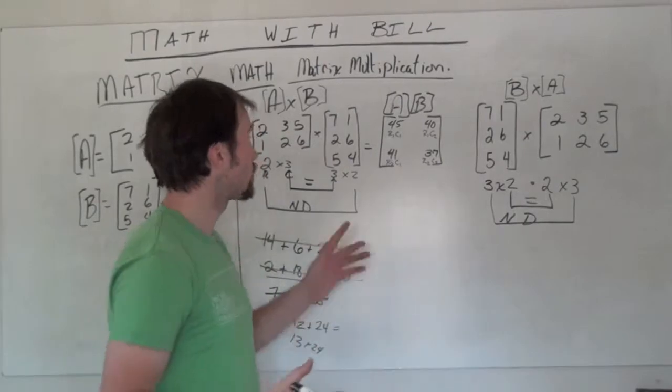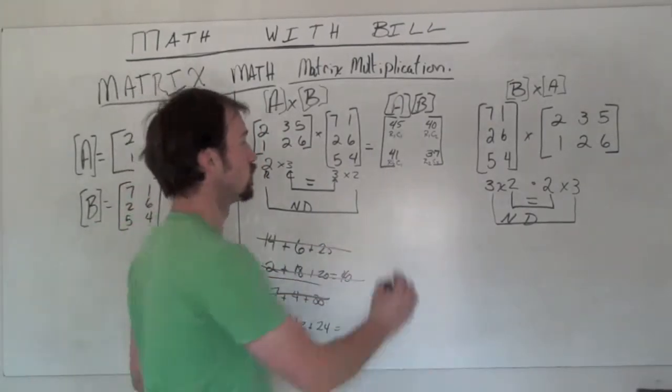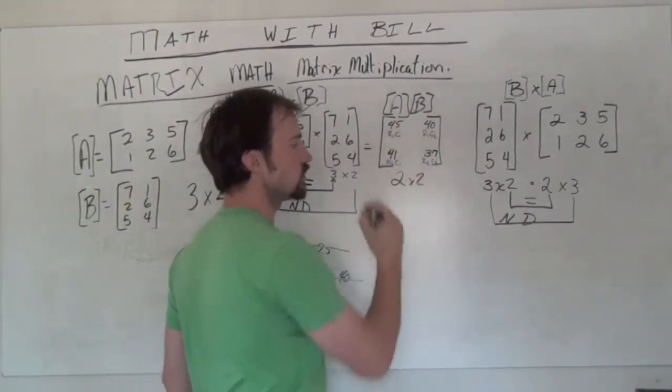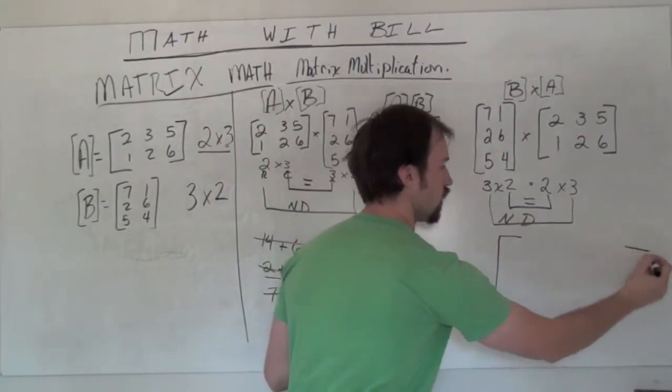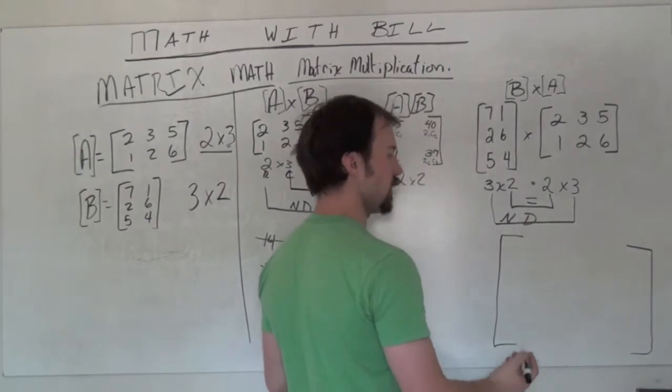It's very different from a 2 by 2. So that was a 2 by 2 resultant matrix. Now we're going to have a 3 by 3. So I make my big 3 by 3.